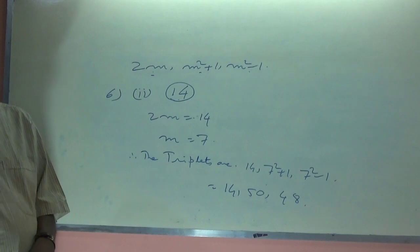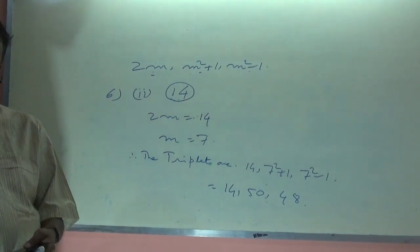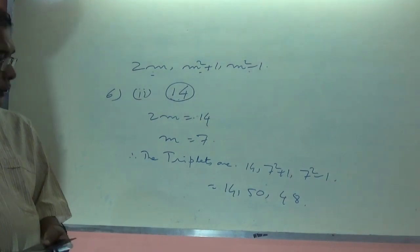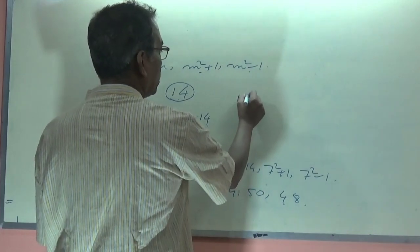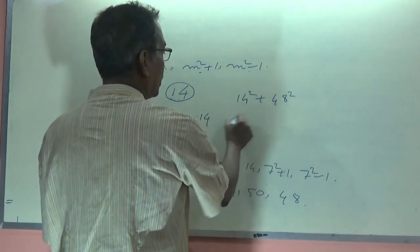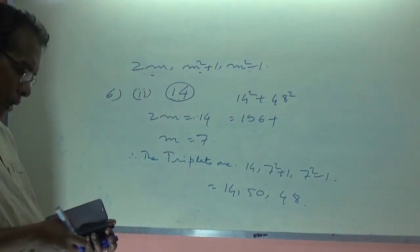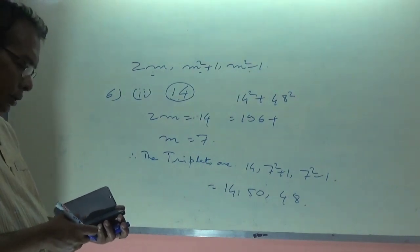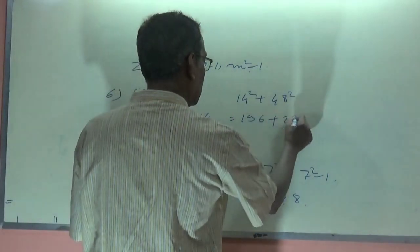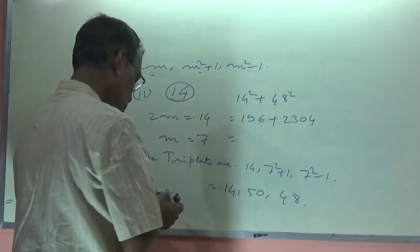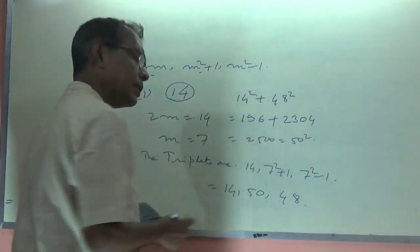Let me verify: 14² + 48² should equal 50². 14² = 196, 48² = 2304, and 196 + 2304 = 2500, which equals 50². So naturally it is a Pythagorean triplet. It is clear.